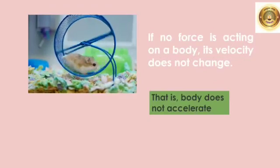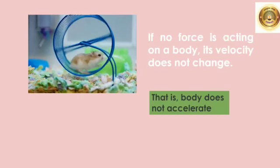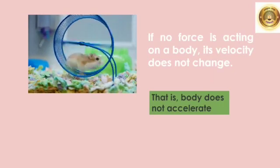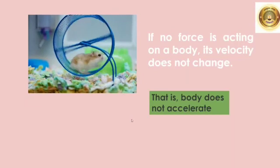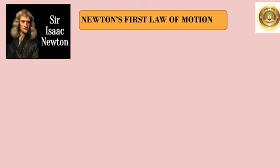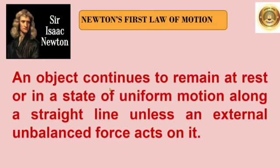Here you can see a hamster turning on the hamster wheel. If no force is acting on the body, its velocity does not change — the body does not accelerate, or it continues in this state unless and until a force acts on it. From all the examples that we saw, it is clear that if no force is acting on a body, its velocity does not change. If the body is stationary, it will remain stationary; and if it is in motion, it will continue in motion with the same velocity and in the same direction. This is Newton's first law of motion, also called the law of inertia, which states that an object continues to remain at rest or in a state of uniform motion along a straight line unless an external unbalanced force acts on it.